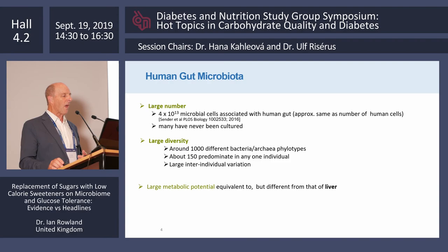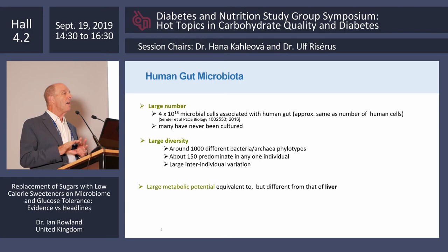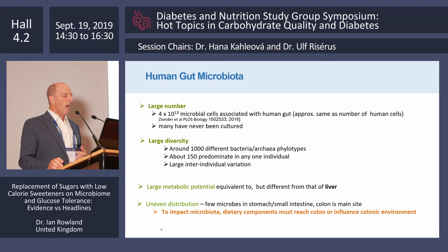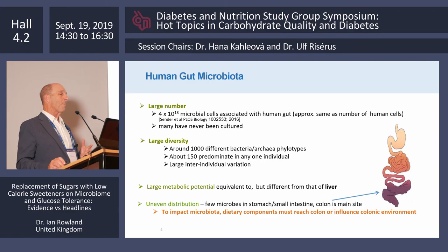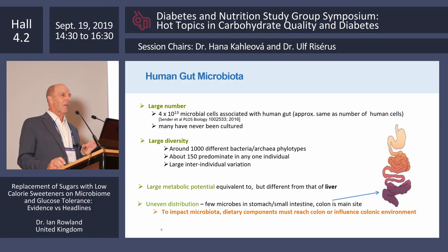The gut microbiota has a very large metabolic potential, considered equivalent in metabolic activity to the liver, though the reactions are very different. It also has a very uneven distribution, which is important for our discussion. There are very few microorganisms in the stomach due to acidic conditions, small numbers in the small intestine, and numbers increase progressively further down the gut — so most bacteria are in the colon. This means dietary components must reach the colon to have an impact on the microbiota; if they don't reach the colon, they shouldn't have an effect.